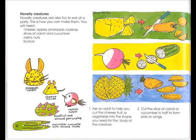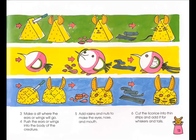Cucumber crocodile with almond teeth. What to do: 1. Ask an adult to help you cut the cheese, fruit, or vegetable into the shape you need for the body of the creature. 2. Cut slices of carrot or cucumber in half to form ears or wings. 3. Make a slit where the ears or wings will go. 4. Push the ears or wings into the body of the creature. 5. Add raisins and nuts to make eyes, nose, and mouth. 6. Cut licorice into thin strips and add it for the whiskers and tail.